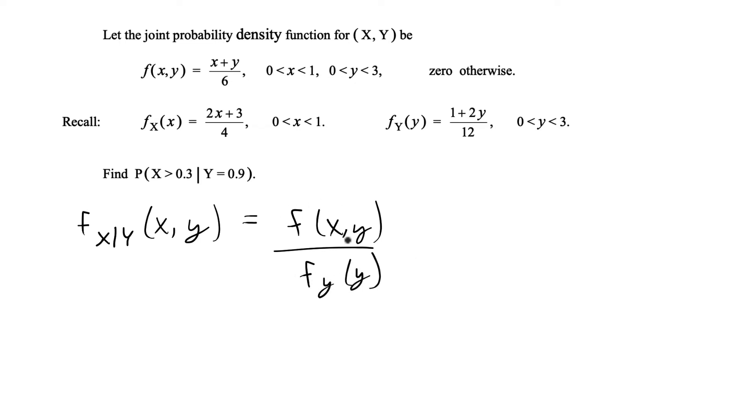We're given the joint probability density function and we're given the marginal so it's basically just plugging in from what we're given. We're given that the joint pdf is x plus y over 6 and the marginal is 1 plus 2y over 12.